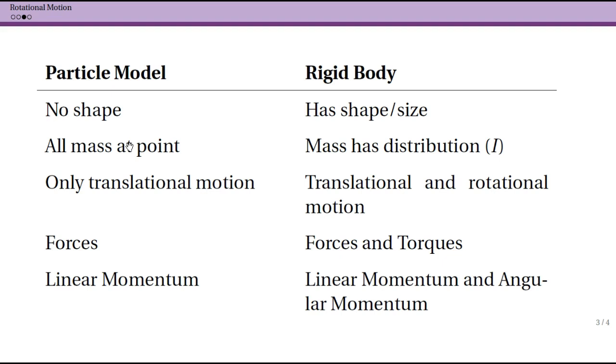In the particle model, all of our mass is located at that point, at that particle. And now the mass is a distribution over the size and shape. I is written here because I is going to be the symbol that we use for moment of inertia. So we actually have to calculate a new quantity—there will be some videos on that—called moment of inertia, which takes into account the distribution of the mass.